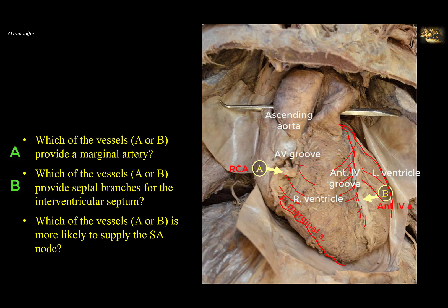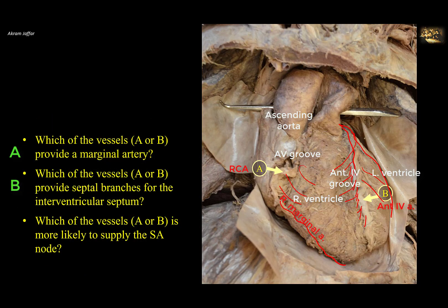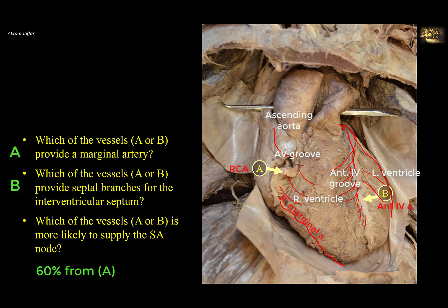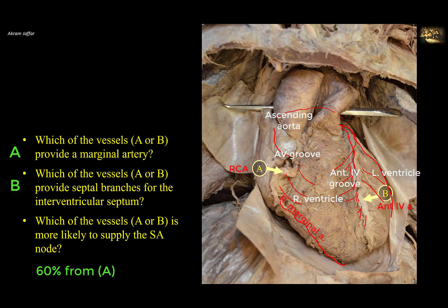Branches to the interventricular septum are derived from arteries in the interventricular grooves — either the anterior interventricular artery, B, or the posterior interventricular artery (not shown, as it is on the inferior surface). The anterior interventricular artery supplies about two-thirds of the interventricular septum with septal branches, so A alone does not provide septal branches. The SA nodal branch in 60% of cases is a branch of the right coronary artery at the beginning of the artery; in 40% it is a branch of the circumflex artery. Therefore B cannot provide the SA nodal branch, and it can only be provided by A.